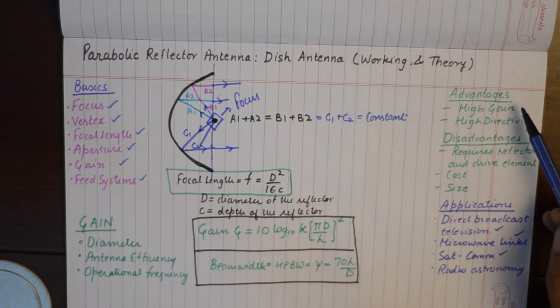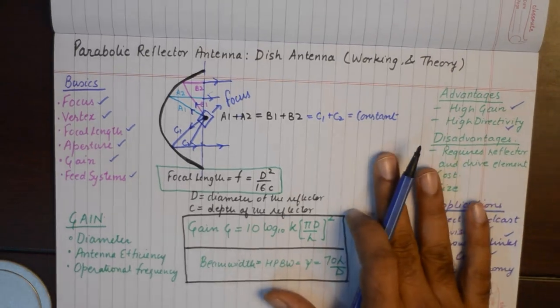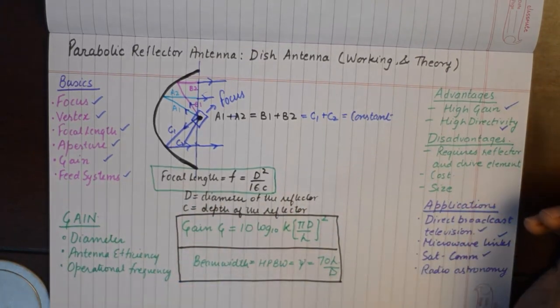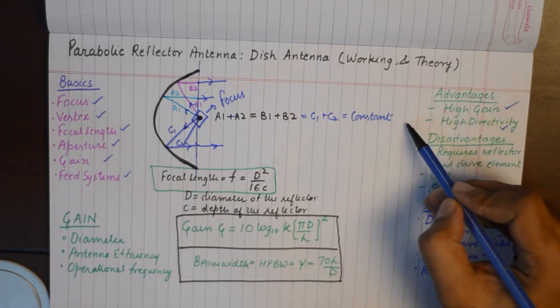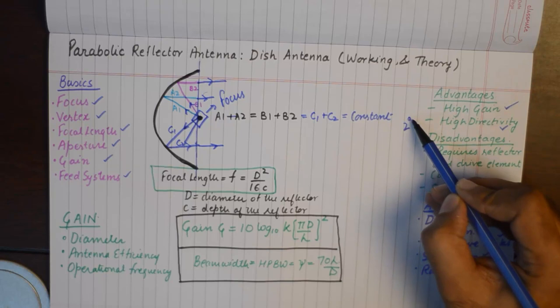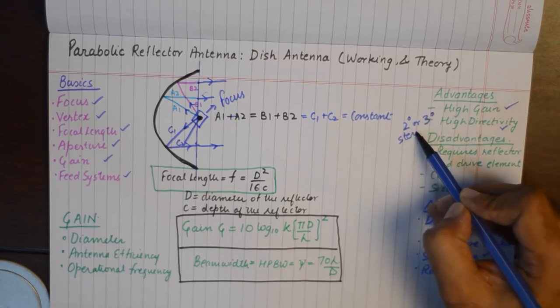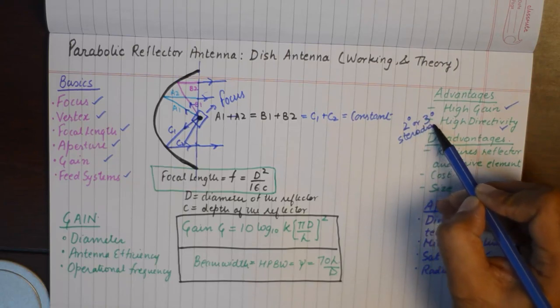This antenna surely gives us very high gain and high directivity. The directivity of this antenna is super high, sometimes 2 or 3 degrees or radians for very directional antennas.